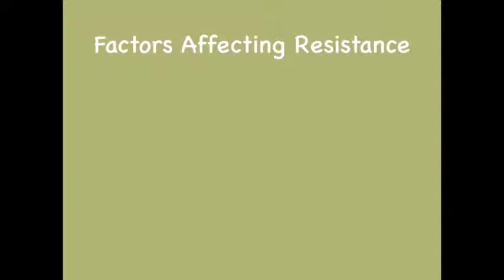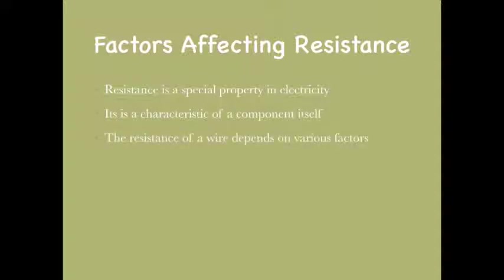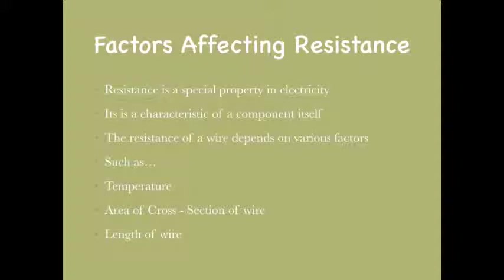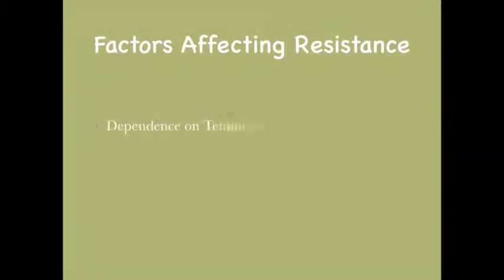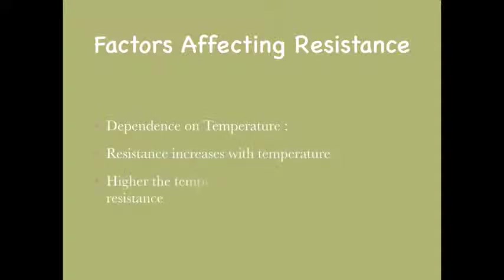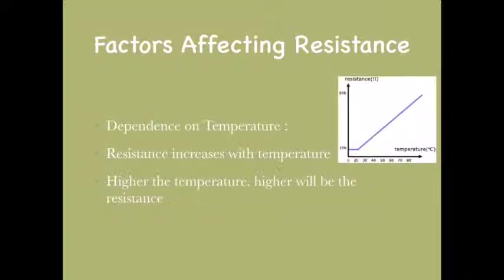Now let's move on to the factors affecting resistance. Resistance is a special property in electricity and is a characteristic of the component itself. The resistance of a wire depends on temperature, area of cross-section, and length of the wire. Starting with temperature: resistance increases with temperature — higher the temperature, higher will be the resistance, as shown in the graph.